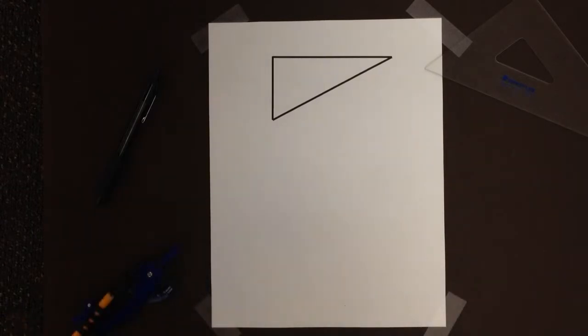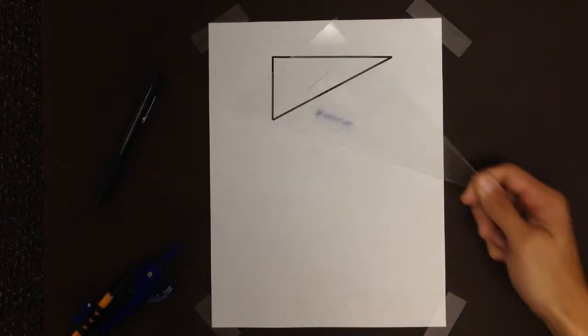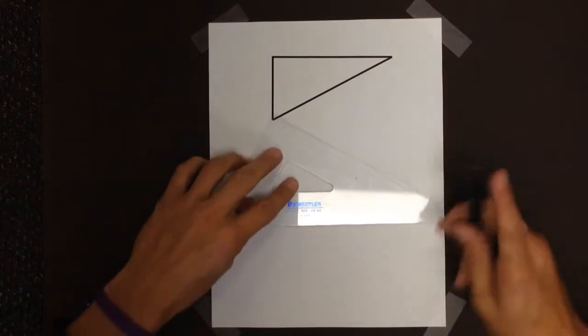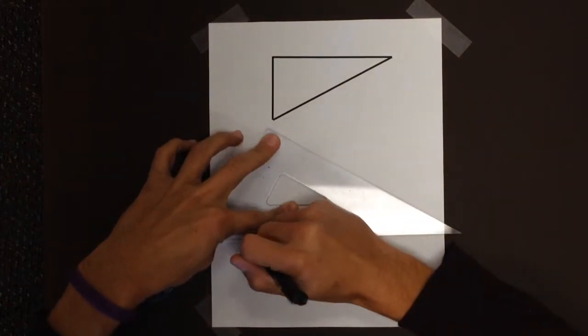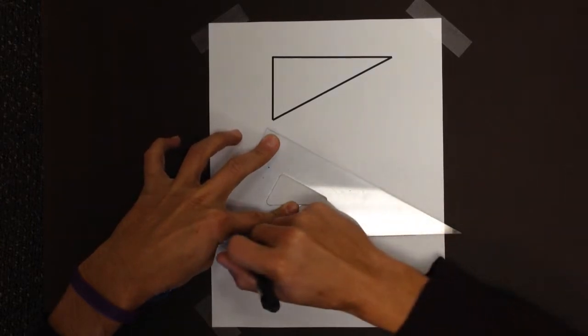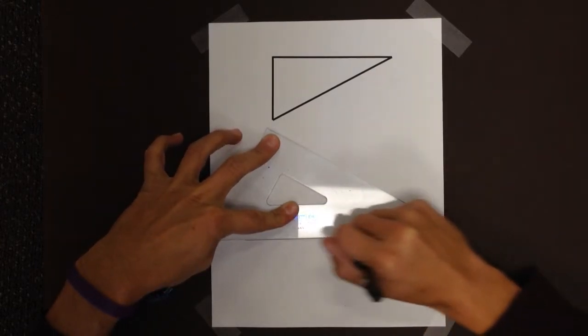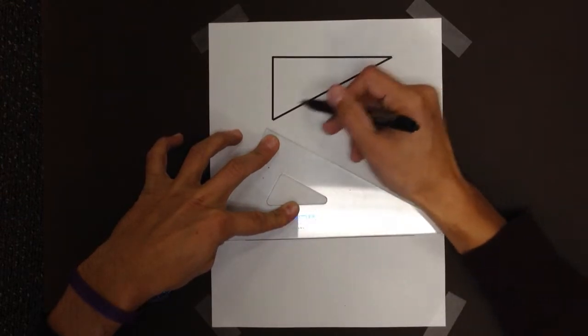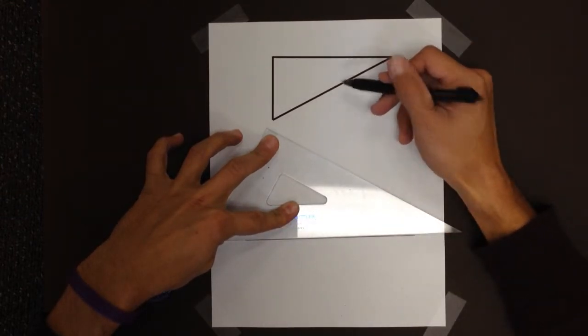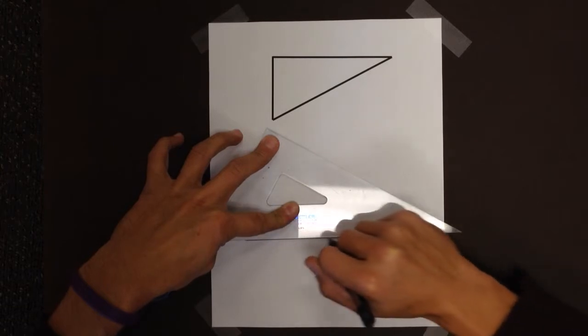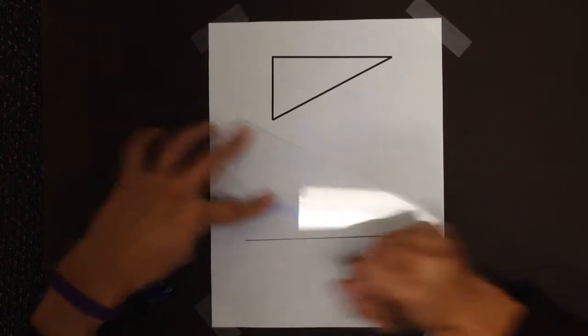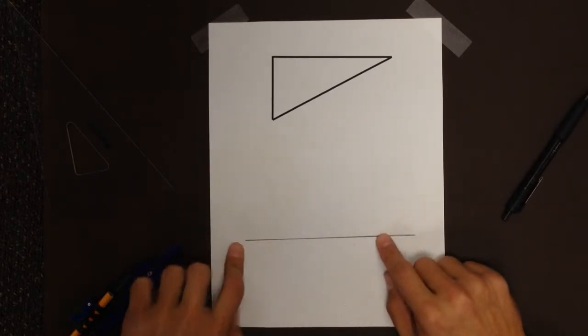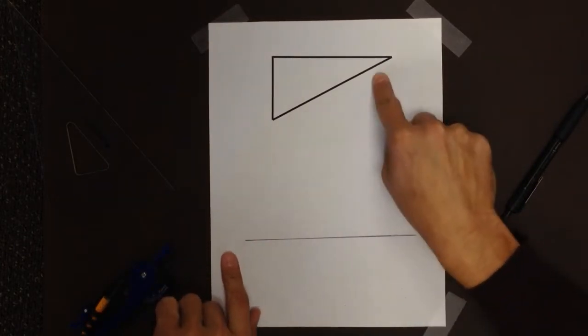So what we're going to do is we're going to start, as we have been for all of our triangle congruence problems, just by drawing a straight line. Now I'm going to draw a straight line and this is going to end up being representative of my base, the base of my triangle. I'm going to make sure it's longer than that segment right there because I'm going to say that's the base of my triangle.